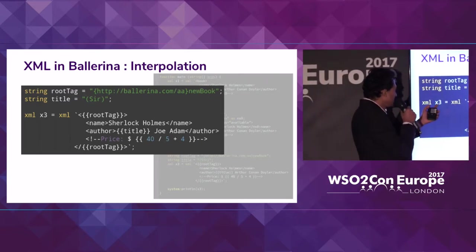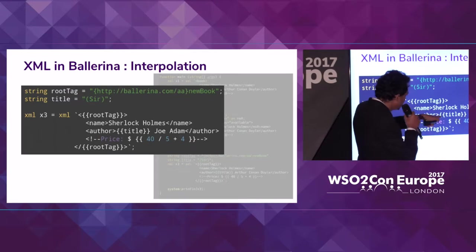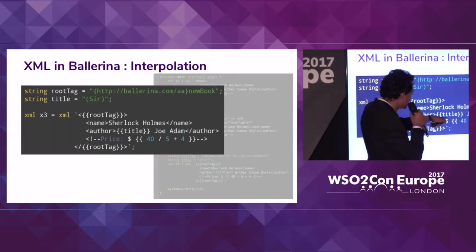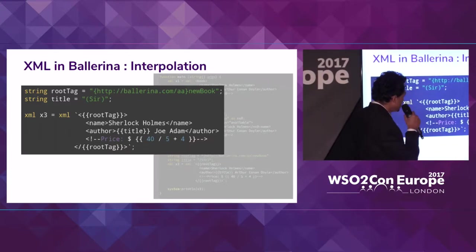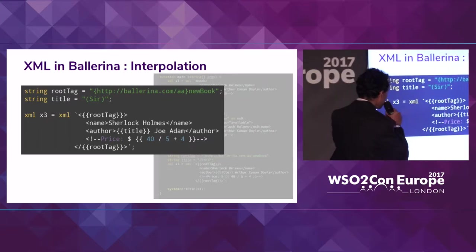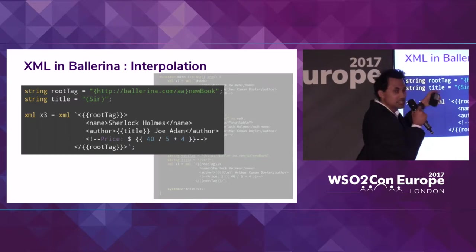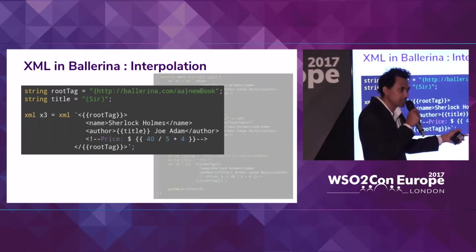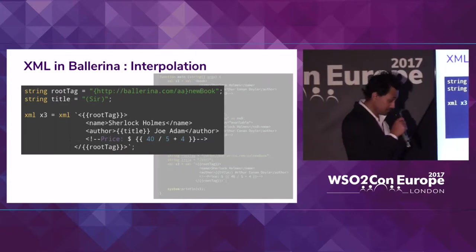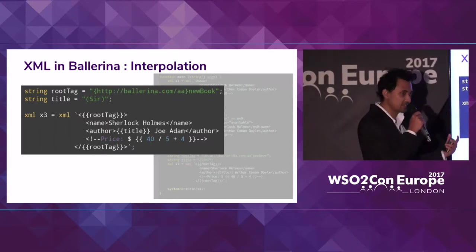Here you can see that I have defined an XML variable 'Xtree' with three placeholders. The first one is filled with the root tag, the second one uses the 'title' string variable, and here I have defined a mathematical calculation. The point is that when you access Xtree, these placeholders will be populated with the values of these variables. This mathematical expression will get evaluated at the time you access the value of Xtree. It doesn't necessarily have to be a mathematical expression — it can even be a function call.